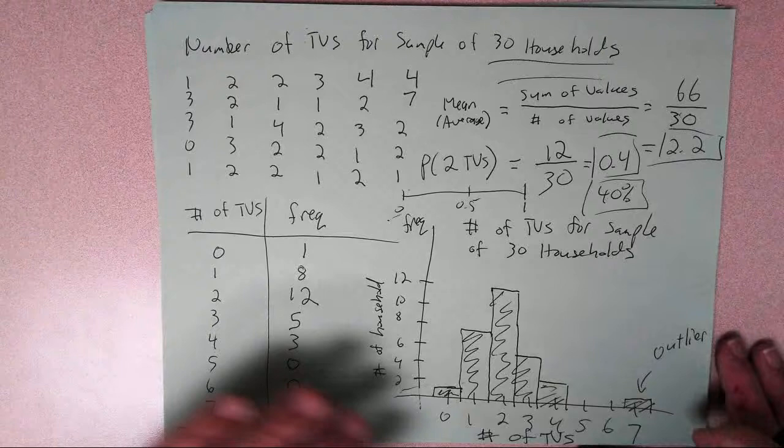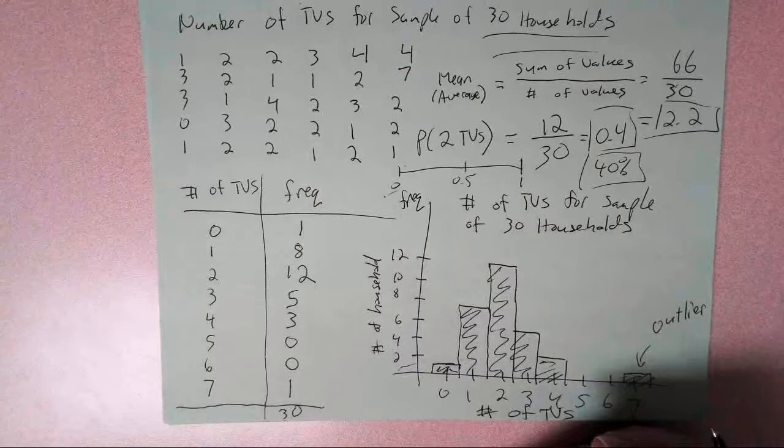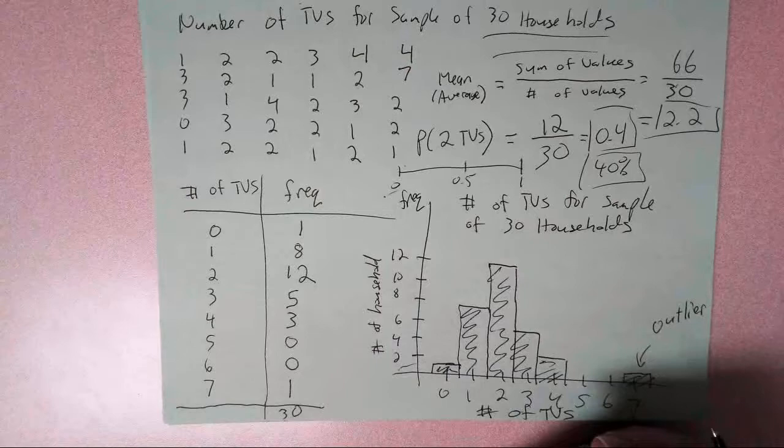So there you go. In 13 minutes, kind of the heart of statistics. It's organizing data and finding measures like the mean that give you the average of the data and then finding the probability of randomly selecting certain observations from a data set.